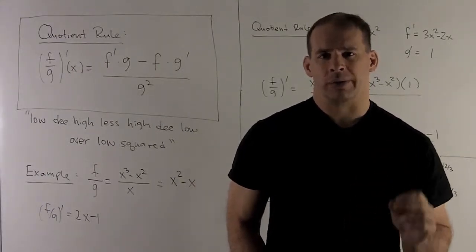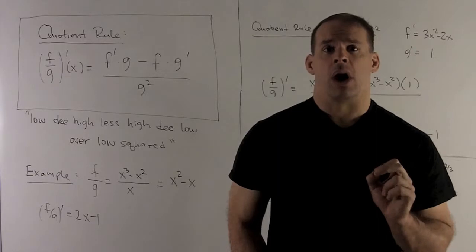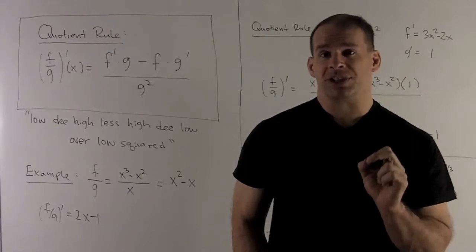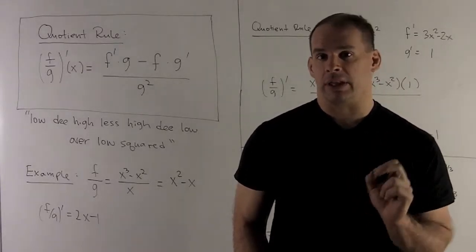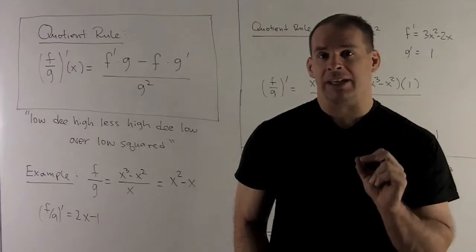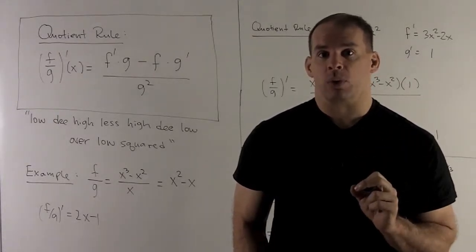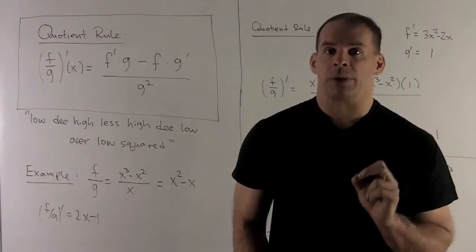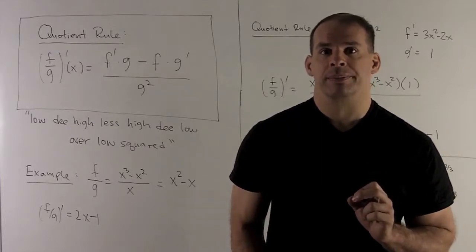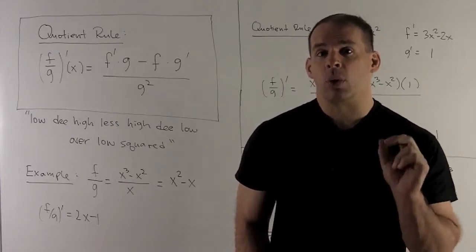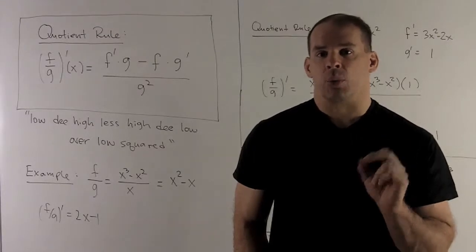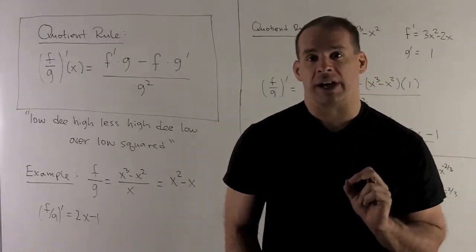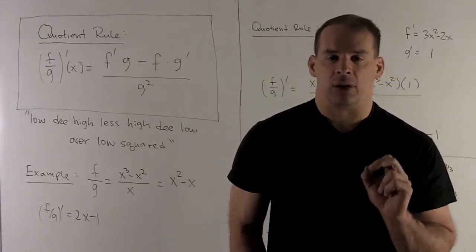The next bit of algebra for derivatives is the quotient rule. Recall that the limit of a quotient f over g (when g is not zero) is just the limit of f over the limit of g — exactly what you'd expect. For a derivative, as we saw with the product rule, things are not going to be so easy. Even worse, for the quotient rule you have a bit to memorize; you pretty much have to gut it out by memory.